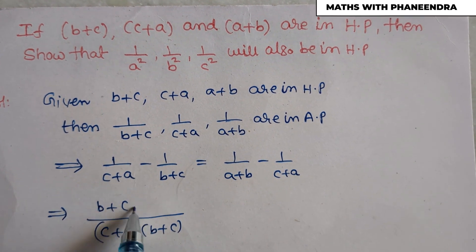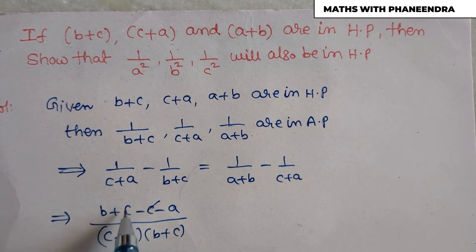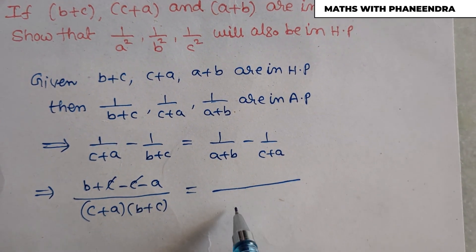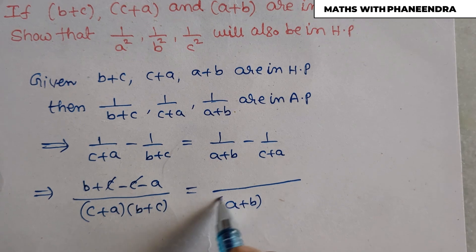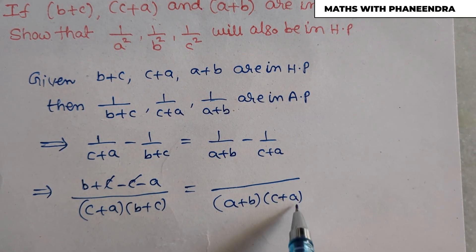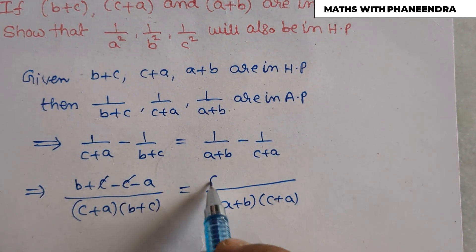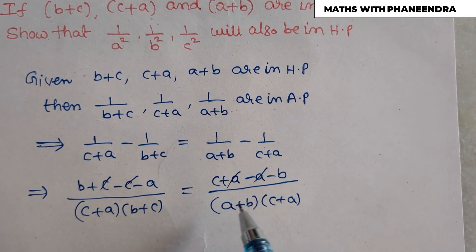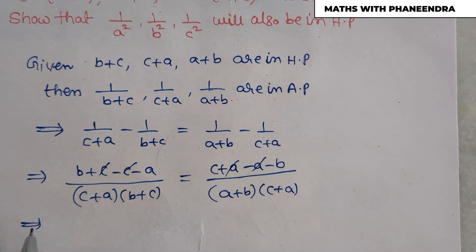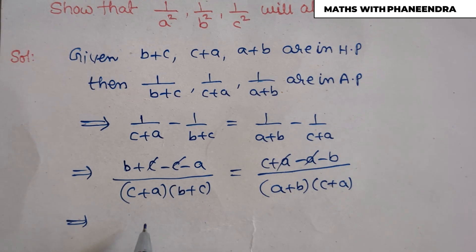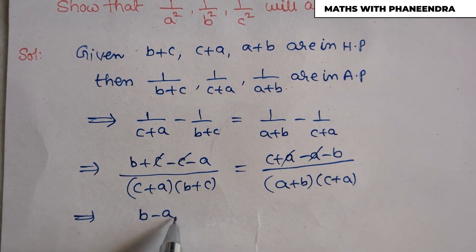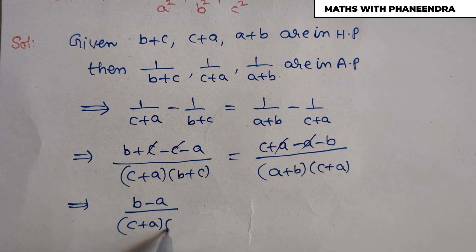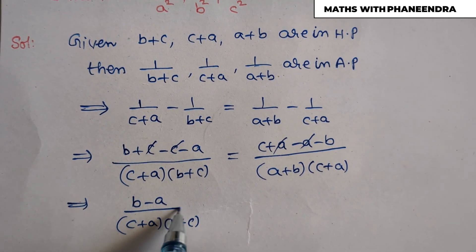Cross-multiplying: on the left side, multiplying gives (b+c) − (c+a) in the numerator, so the c terms cancel leaving (b−a). On the right side, (c+a) − (a+b) gives (c−b). This simplifies to (b−a) divided by (c+a)(b+c) equals (c−b) divided by (a+b)(c+a).